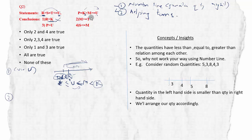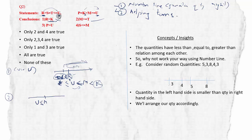Conclusion 2: Is M > T? From our number line, M is towards the right of T — we can directly see this. To confirm: M ≥ U, and U ≥ T, so M is to the right of T. Therefore M is greater than T. Conclusion 2 is true.